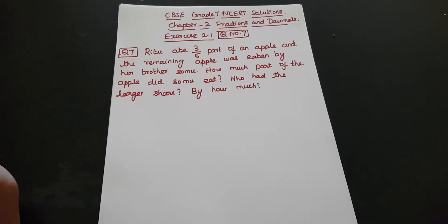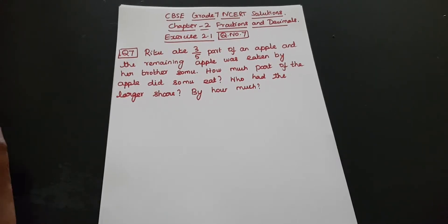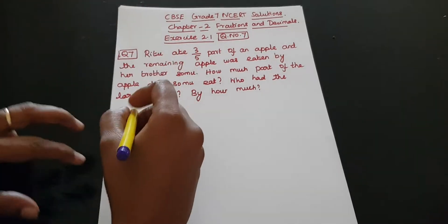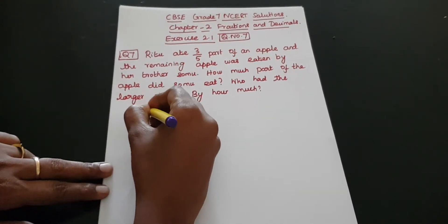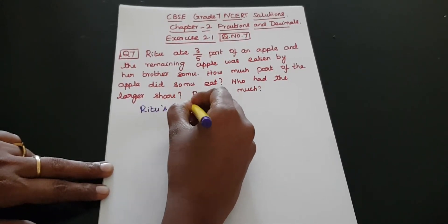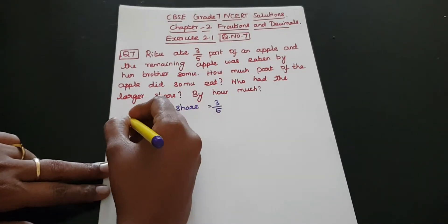Reeta ate one apple, 3 by 5 part of an apple. Remaining apple was eaten by brother Somu. So, remaining part of the apple we can find out. Reeta's share is 3 by 5. Somu's share we need to calculate.